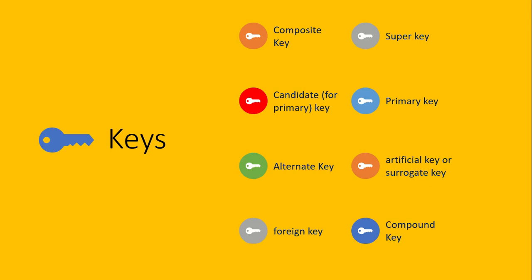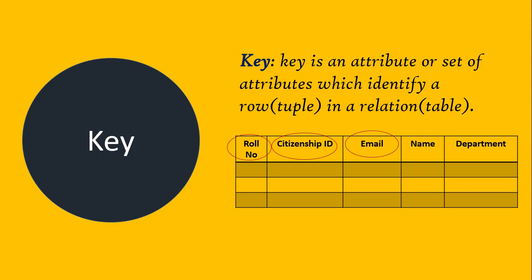In this video I will discuss different kinds of keys in DBMS — database management system. A number of times we hear about different terms for different kinds of keys in DBMS, so let's see what a key is. A key is an attribute or a set of attributes which identifies a row or tuple in a relation or table.